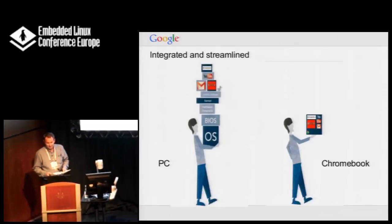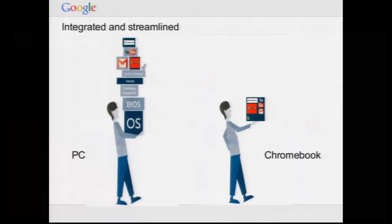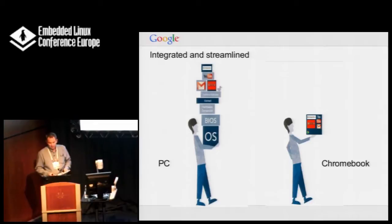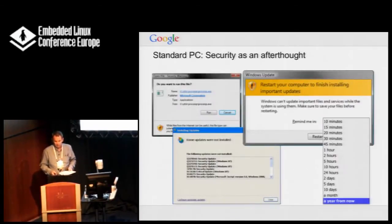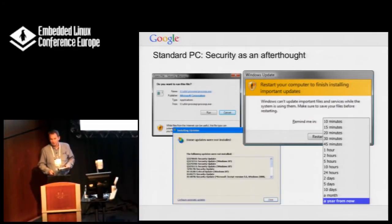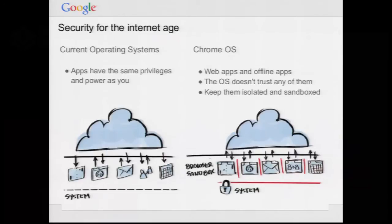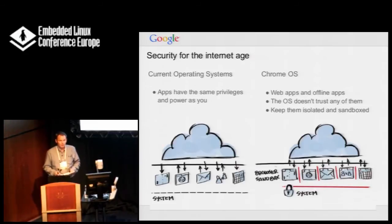Chromebook is a normal computer, but we've tried to integrate the components so that everything's streamlined and works together nicely. The only thing you get when you start up a Chromebook is a web browser — no native applications. We don't want people to have to worry about maintaining their computer; we want it to just work and not rot over time. The security was built in from the start. The security model is essentially that we don't trust any of the applications — even Chrome, the web browser. Everything runs in a sandbox, and the OS keeps everything isolated.